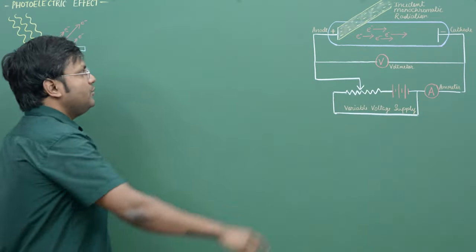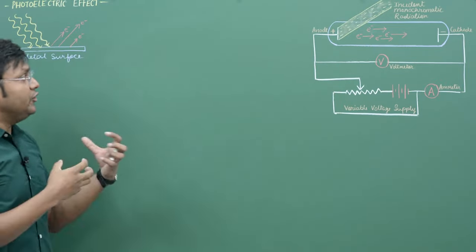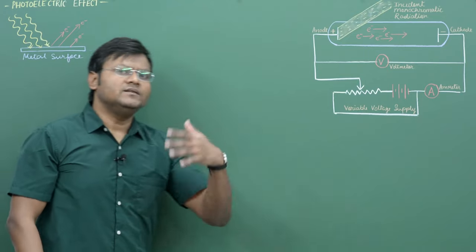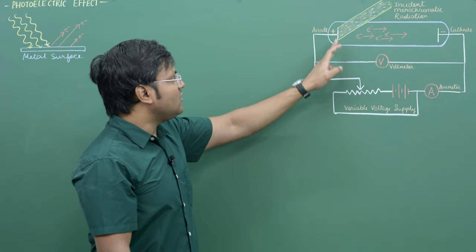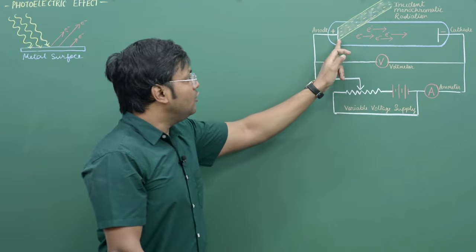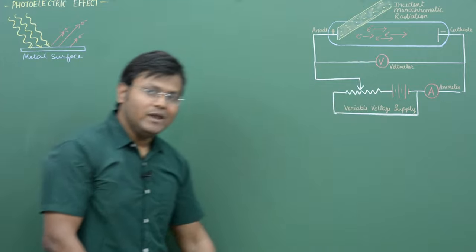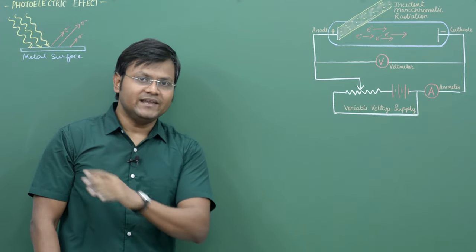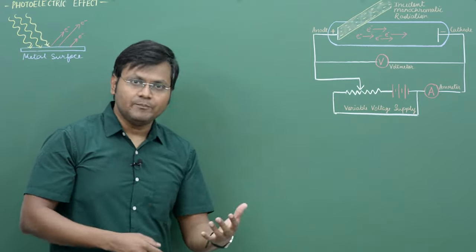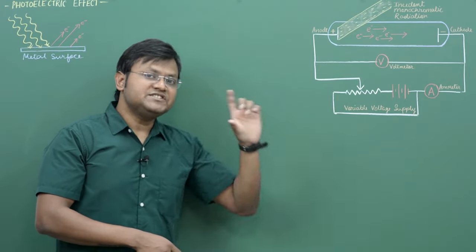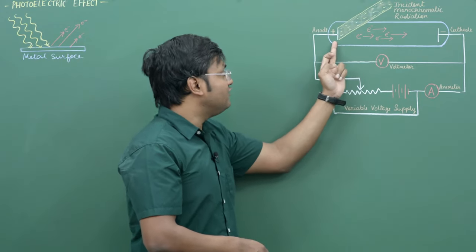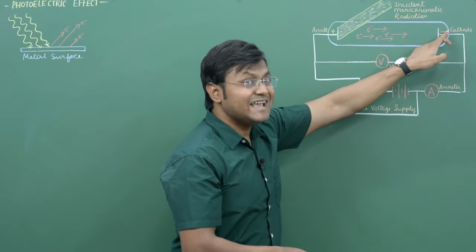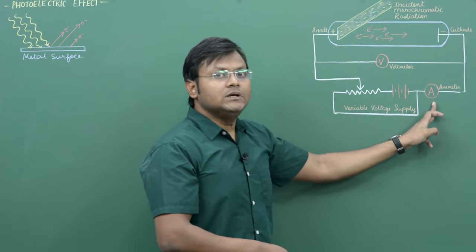The positive terminal is the anode and the negative terminal is the cathode. If we irradiate the metal plate of the anode with incident monochromatic radiation, under suitable conditions electrons are ejected from the metal surface. If these electrons have sufficient energy, they reach the cathode, constituting a current measured by the ammeter. Whenever incident monochromatic radiation falls on the metal surface, these electrons get ejected with some kinetic energy to overcome the potential barrier between the electrodes.